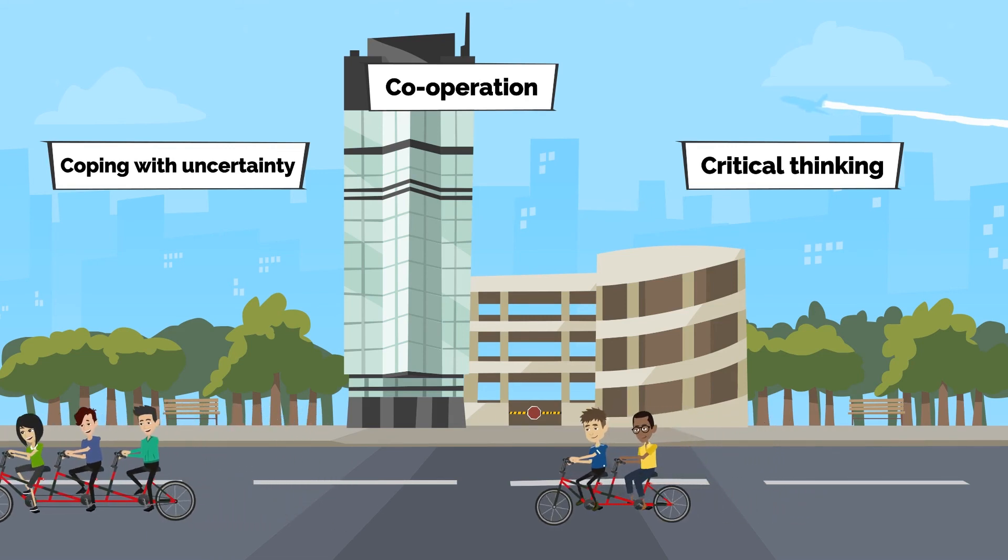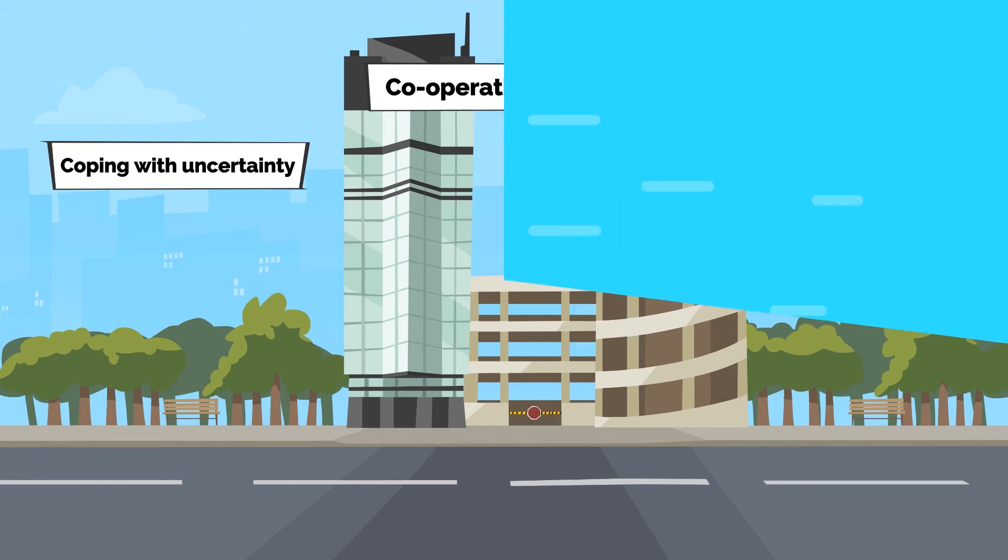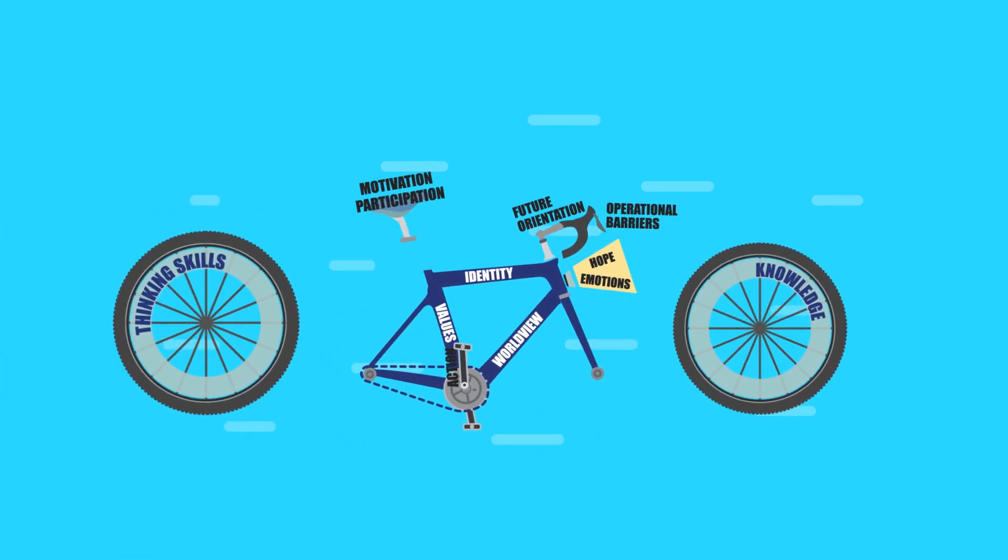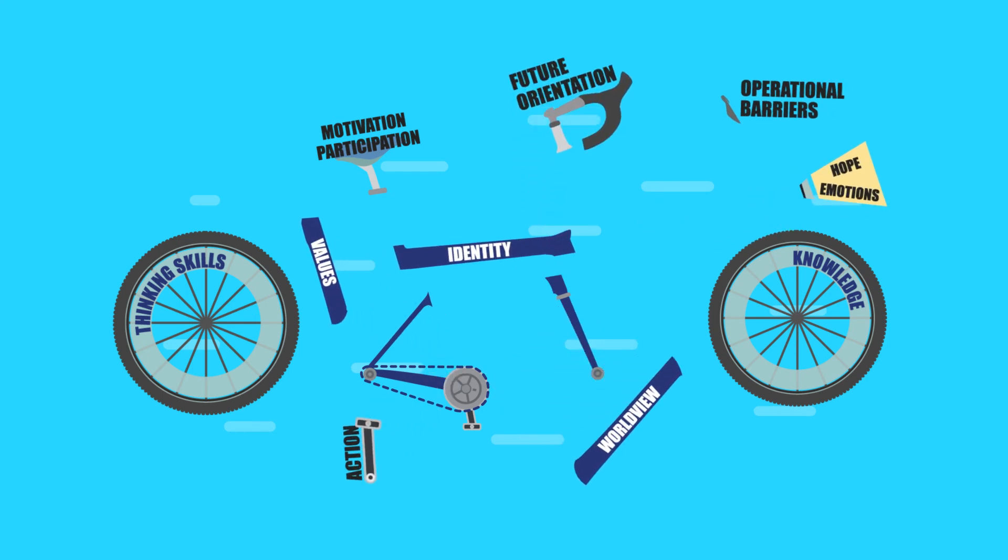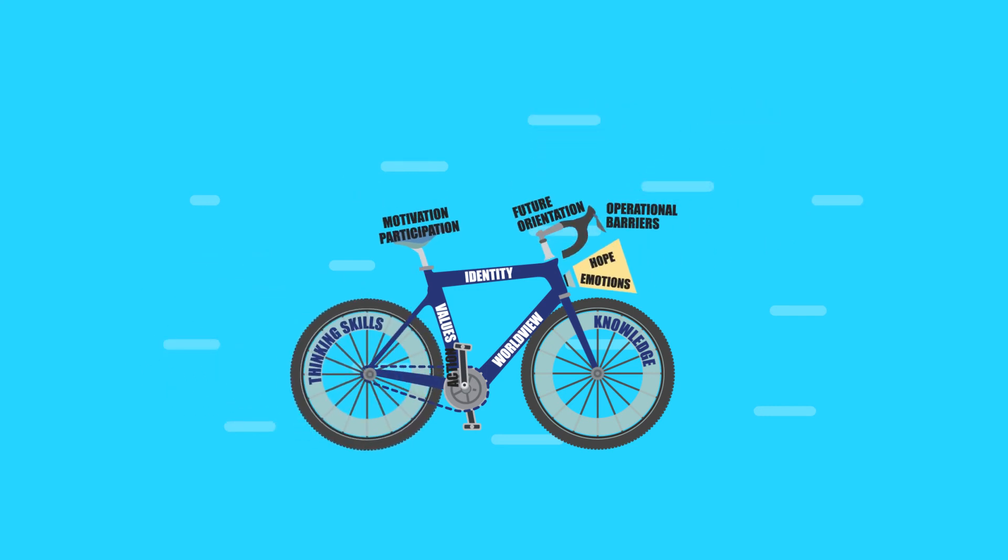The metaphor of the bicycle aims to help understand and remember the complexity of holistic climate change education, so that we don't cut corners in climate change education. The model can also help in curriculum design, and help a teacher reflect on their own teaching. It is important that climate change education addresses all aspects of the bicycle model, though it is not possible to do this in a single subject area. Therefore, teacher collaboration is essential for holistic climate change education.